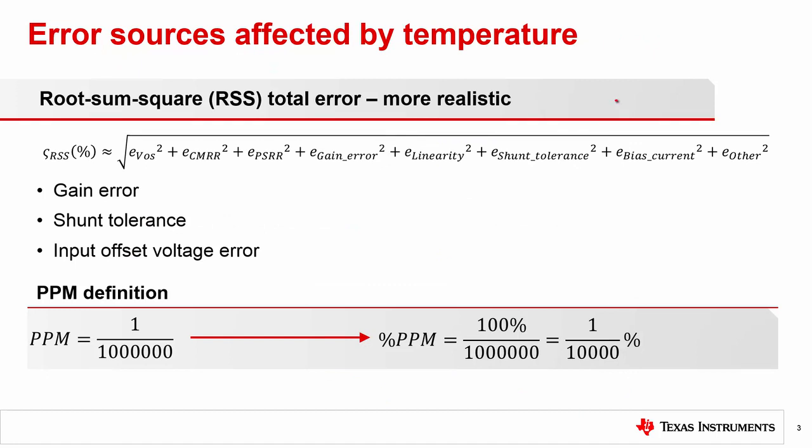In previous videos, we introduced the root sum of squares, RSS, which is a total error equation for current sense amplifier circuits, as shown here. This video focuses on error related to temperature. A quick glance at the formula reveals that there is no specific term called E-temperature. So where is the temperature error contribution then? Turns out that the impact of temperature needs to be included in the calculation of multiple error terms found in the RSS formula.